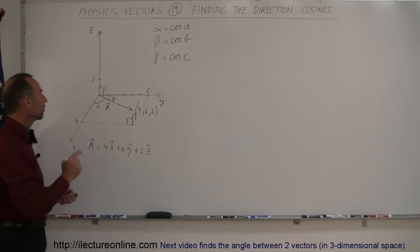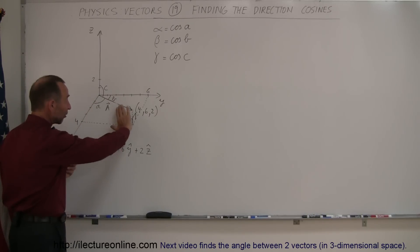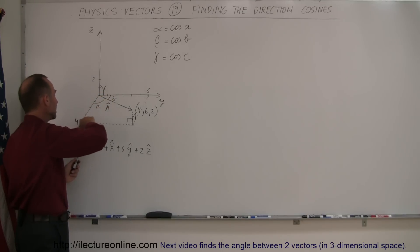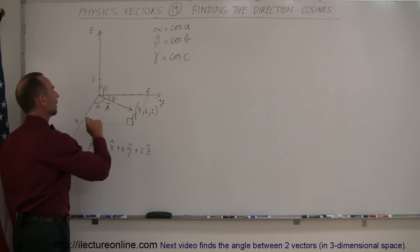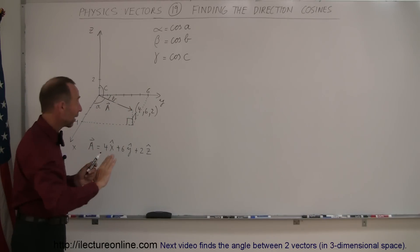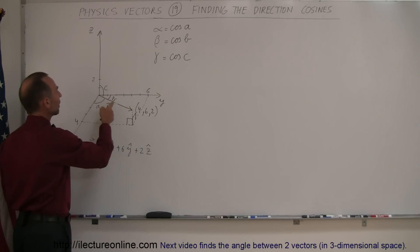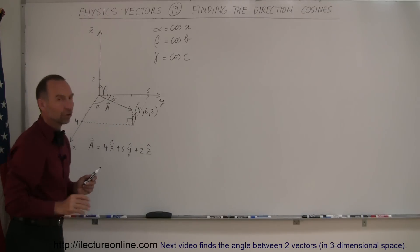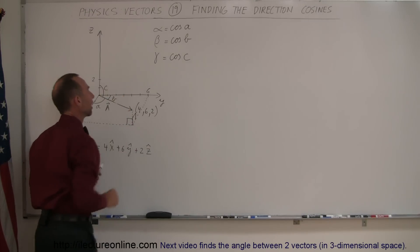Now, also notice that vector A makes an angle with the x-axis — I labeled it as A. Be careful: vector A does not lie in the xy-plane, it lies up above the xy-plane. So there's an angle between the x-axis and vector A — we call that angle A. There is an angle between vector A and the y-axis, and an angle between vector A and the z-axis. We call them A, B, and C. The direction cosines are defined as the cosine of A, the cosine of B, and the cosine of C.